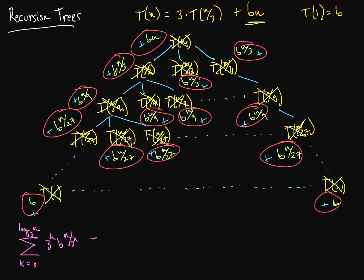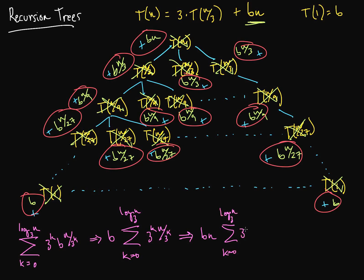Let's simplify this. We can factor the B out: sum from K equals 0 to log base 3 of N of 3 to the K times N over 3 to the K. We can simplify further by pulling the N out — N is constant throughout. So we get B times N times the sum from K equals 0 to log base 3 of N of 3 to the K times 1 over 3 to the K. And obviously that inner term equals 1.